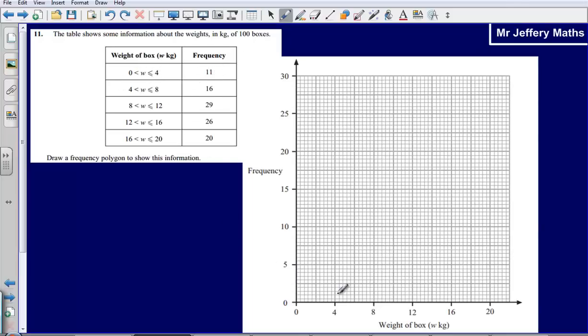So we've got 0 to 4 first. So 0 to 4 has a frequency of 11. So that is just there. Be careful here, notice that the scale goes from 10 to 15, and 10 to 15 is being represented by 10 little squares. That means that each of those little squares is only worth 0.5.